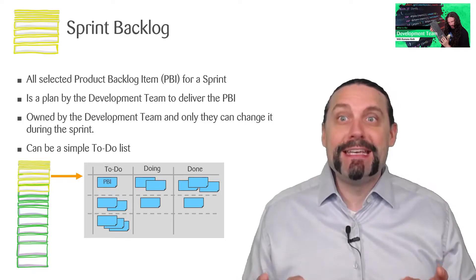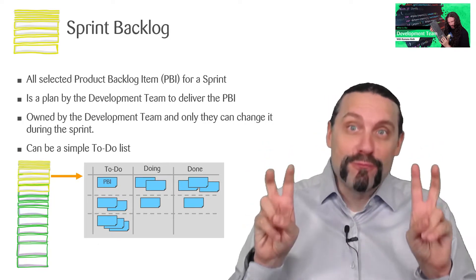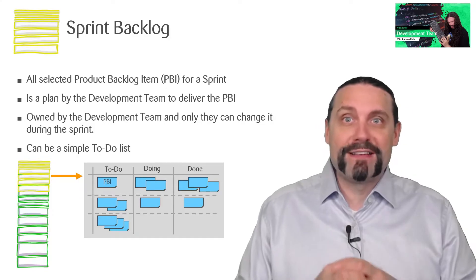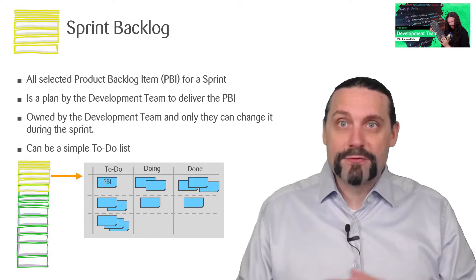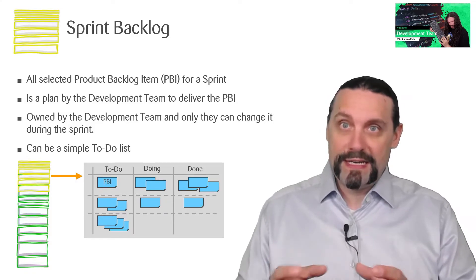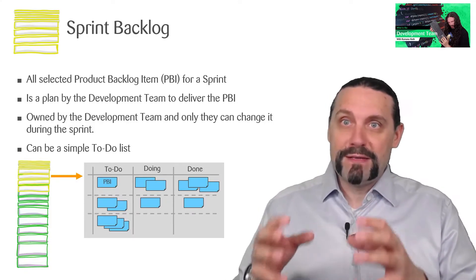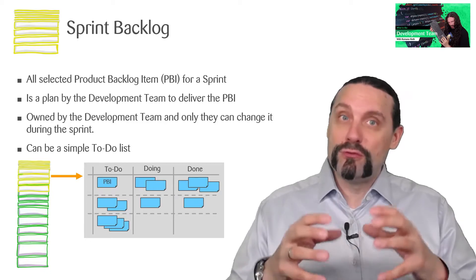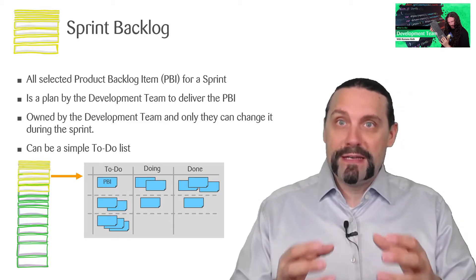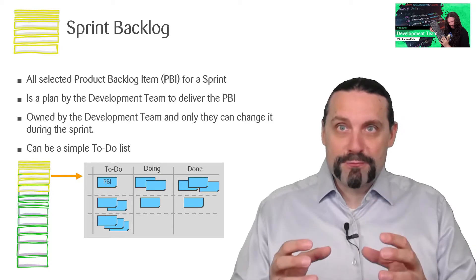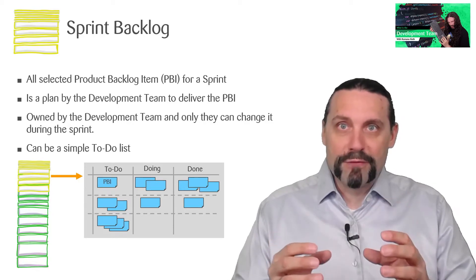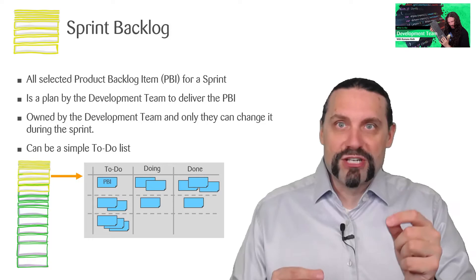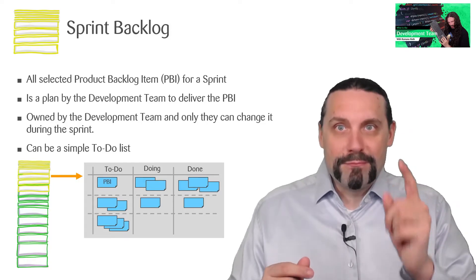I can already hear the whining and crying of the wannabe product owners out there, which are basically nothing else than project managers. Yes, it's true. If you want to be truly agile, then the development team needs to own the sprint backlog, and only they can change it together with you as a product owner if needed. But the sprint backlog is a plan of the development team to deliver the selected product backlog items which have been prioritized by the product owner.